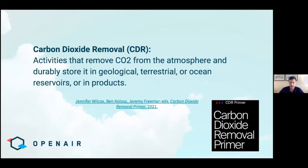A gigaton is a billion tons, and that's a lot of mass. In aggregate across the world, we remove less than 100,000 tons of carbon dioxide from the atmosphere via CDR in 2021. So we have many orders of magnitude we need to scale. We're not going to get to gigaton scale if we don't start working on it now. We need to get started this decade, get to megaton scale, and then go from there to gigaton scale.